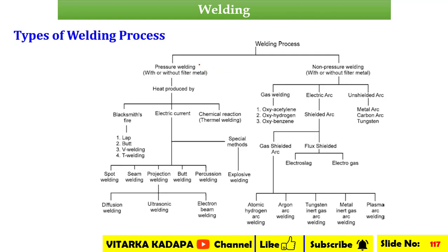Next, the types of welding processes. The basic welding process is classified as pressure welding and non-pressure welding — that is, pressure welding and fusion welding. In fusion welding, we have gas welding, electric arc welding, and unshielded arc welding. In gas welding, we have three categories: oxy-acetylene, oxy-hydrogen, and oxy-benzene.